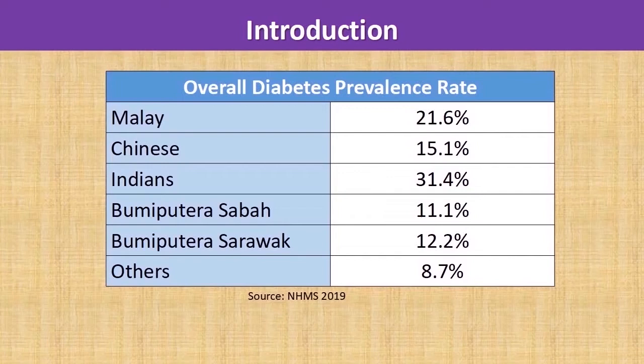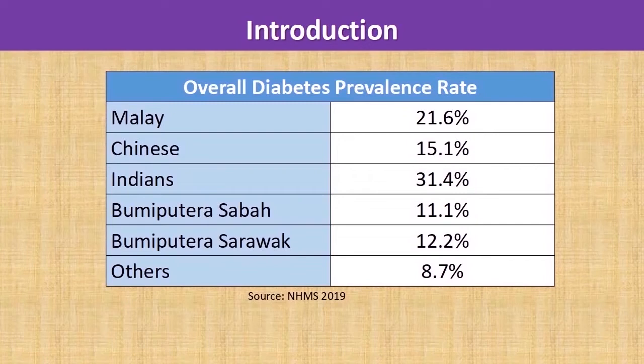This table was taken from the Malaysian National Health and Morbidity Survey conducted in 2019. It is evident that diabetes mellitus is very prevalent amongst Malaysians. The highest diabetes rate was observed amongst Indians, which recorded a whopping 31.4 percent, followed by the Malay and Chinese ethnic groups.